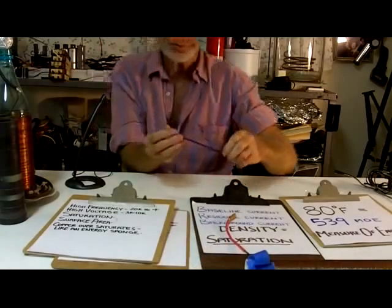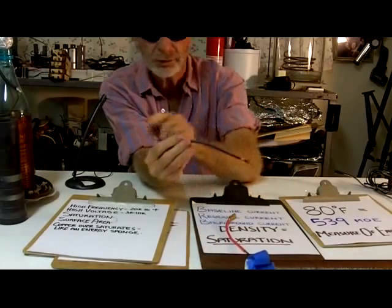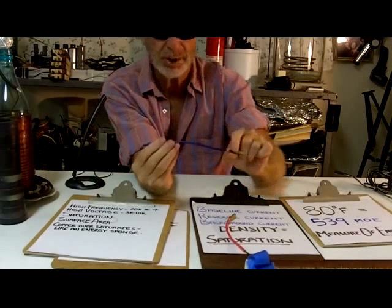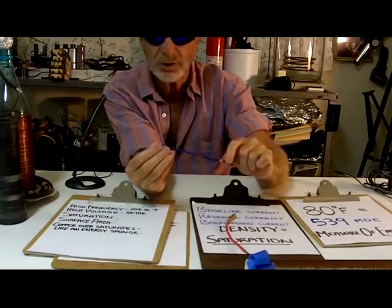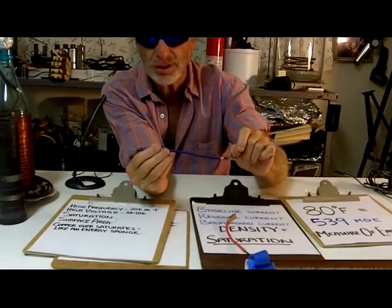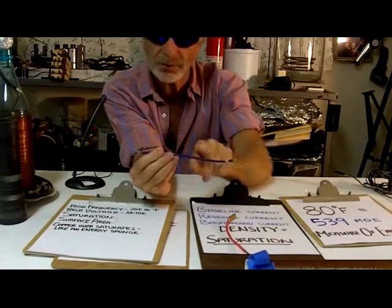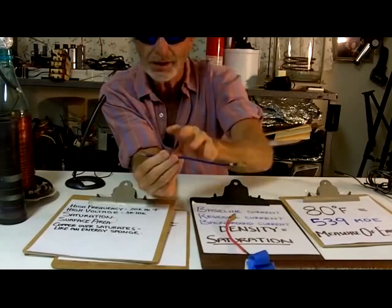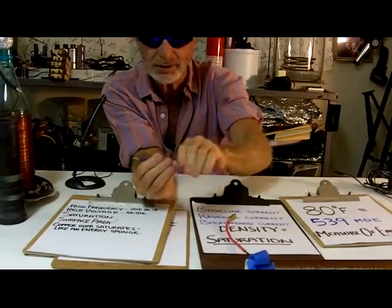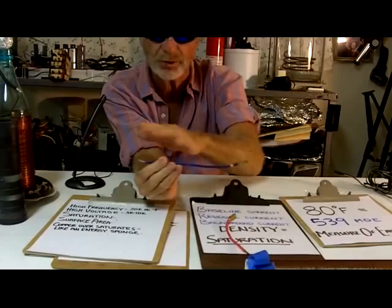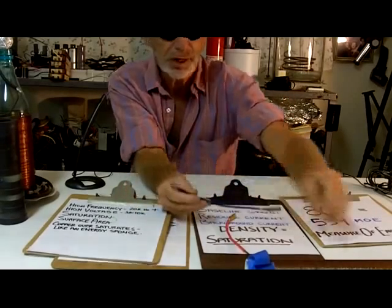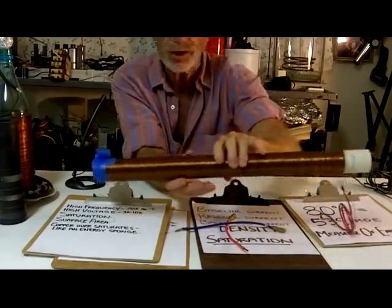When you pass electricity through this wire, say you put in a tablespoon of electricity in here, and it's going to come out over here. When it comes out, it's actually going to be a tablespoon plus a little bit. That little bit that was in there before is now part of this part. Instantly, the heat electricity goes back and it resaturates the wire again. So now it's got this extra charge.